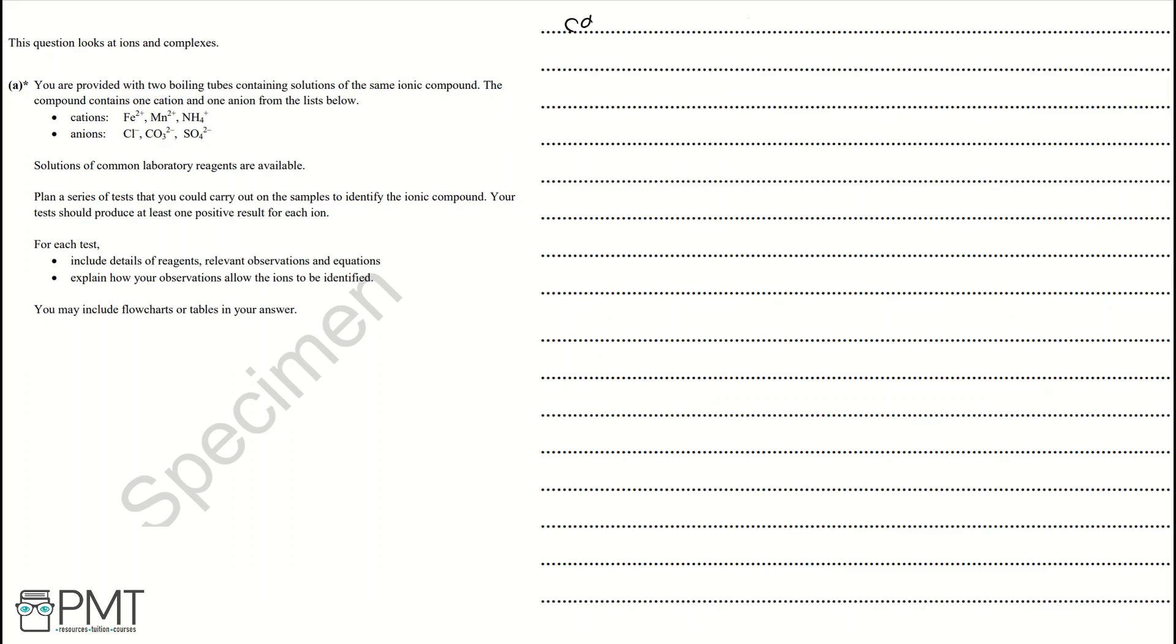If we begin with the tests for the different cations presented in the question, we can set this out as a table with cations, the test, and the result. We have three different cations: Mn²⁺, Fe²⁺, and NH₄⁺. We're going to test each of these with aqueous sodium hydroxide, NaOH. With the NH₄⁺ ion, you need to have some gentle heating. This is detail we're including because they've asked for any relevant details.